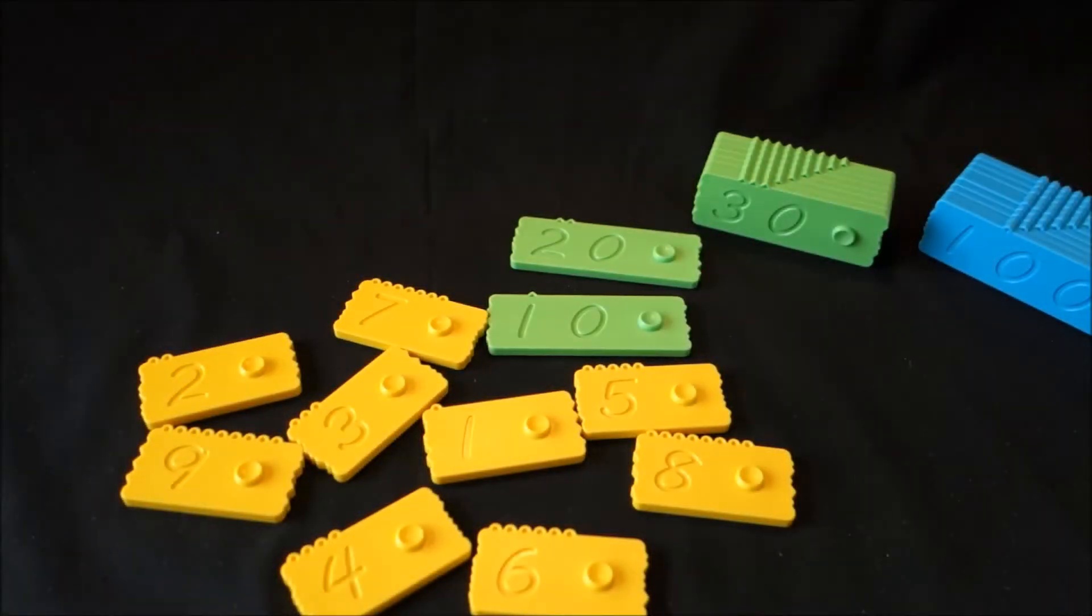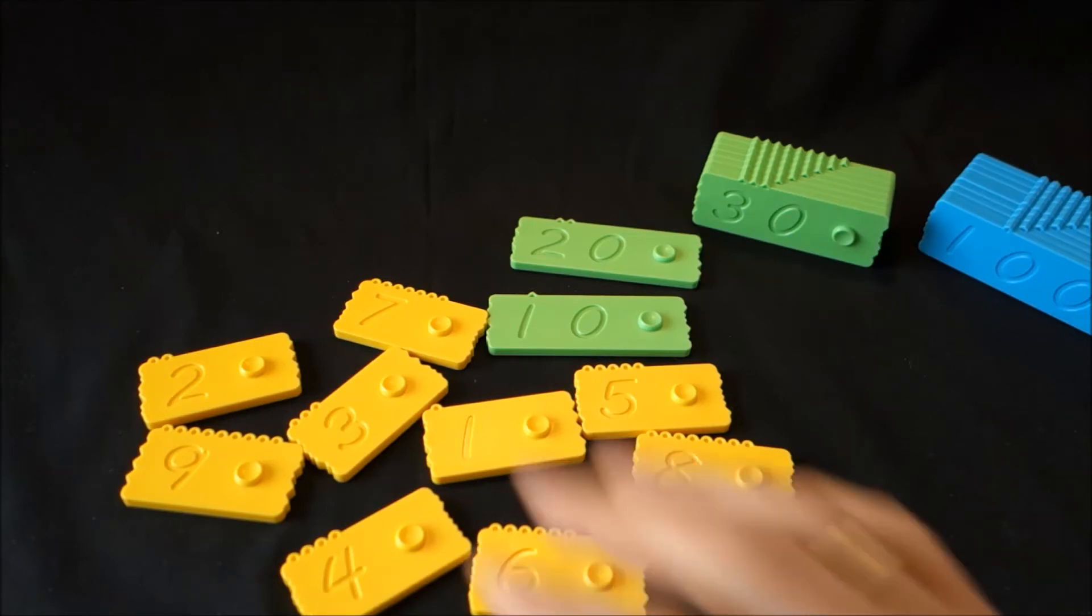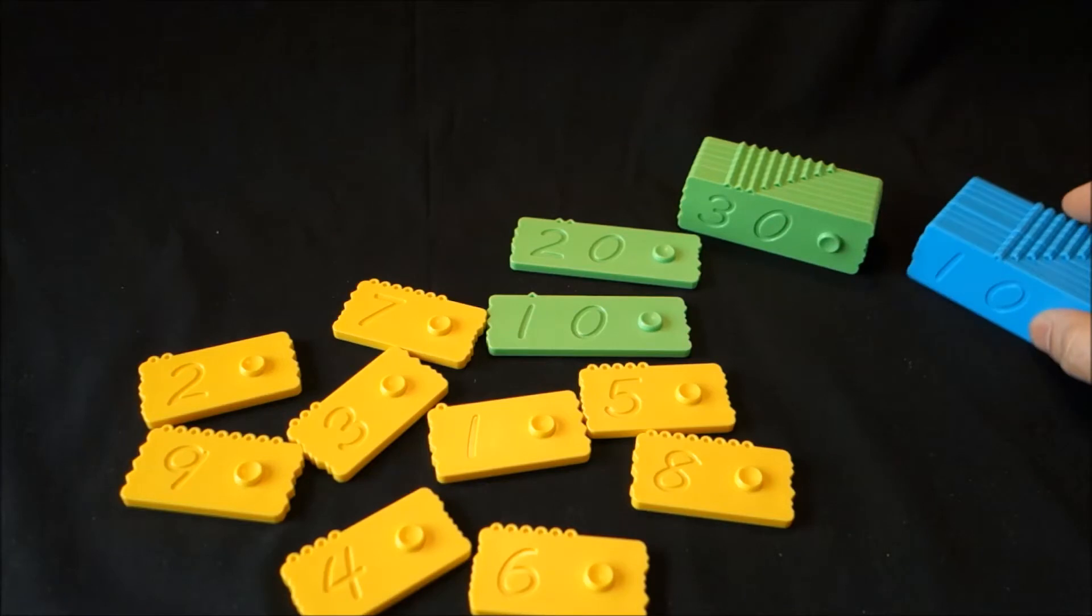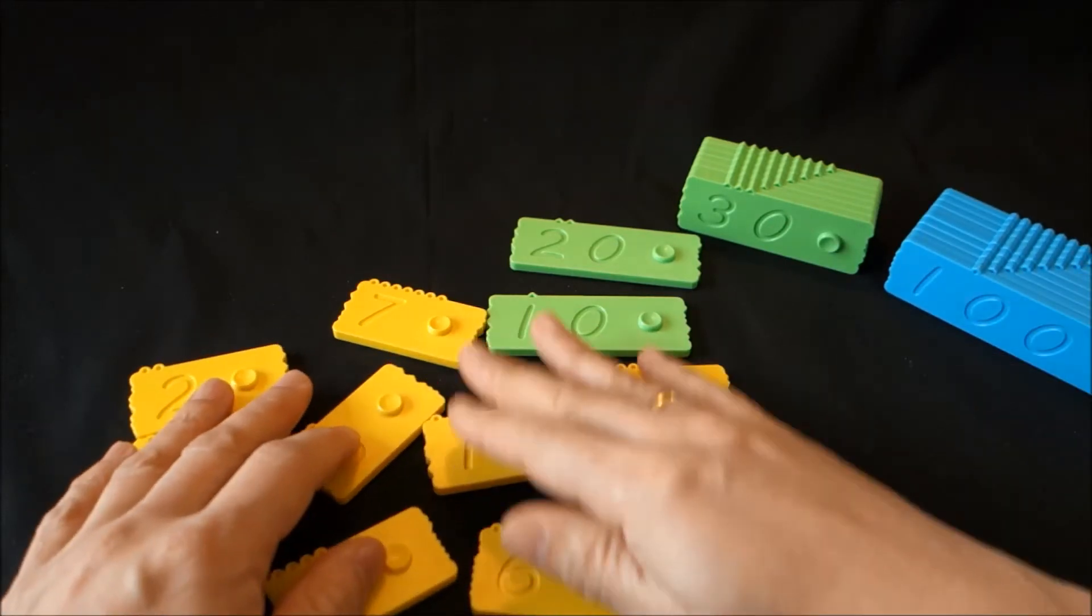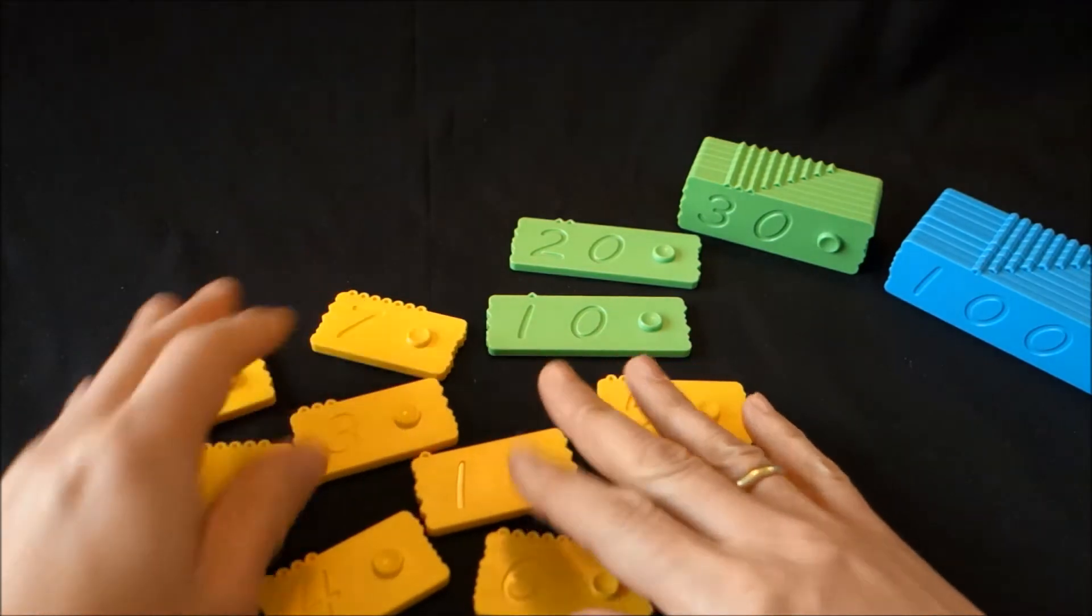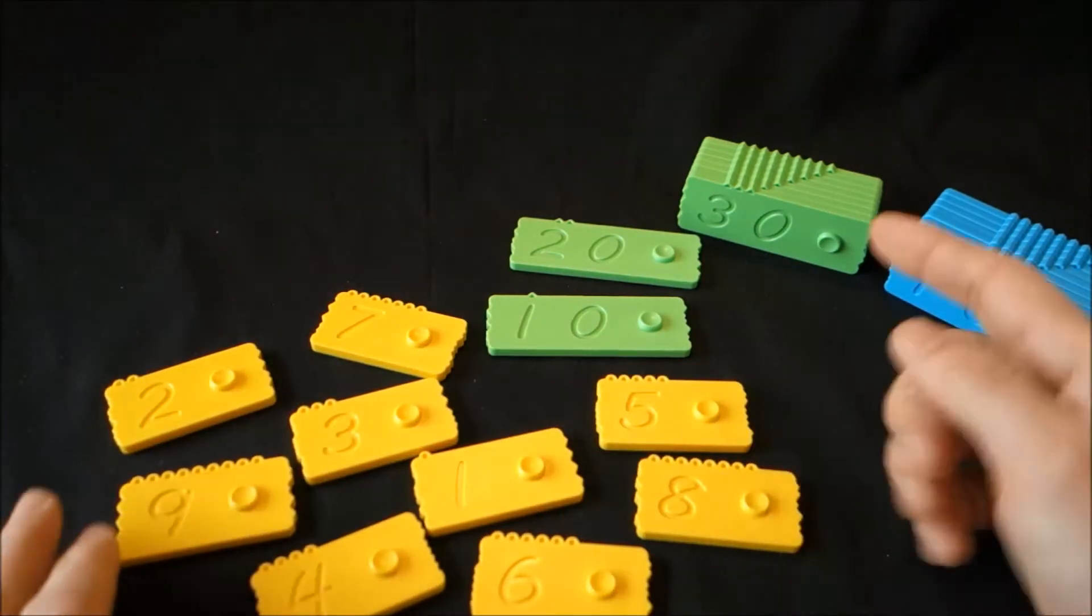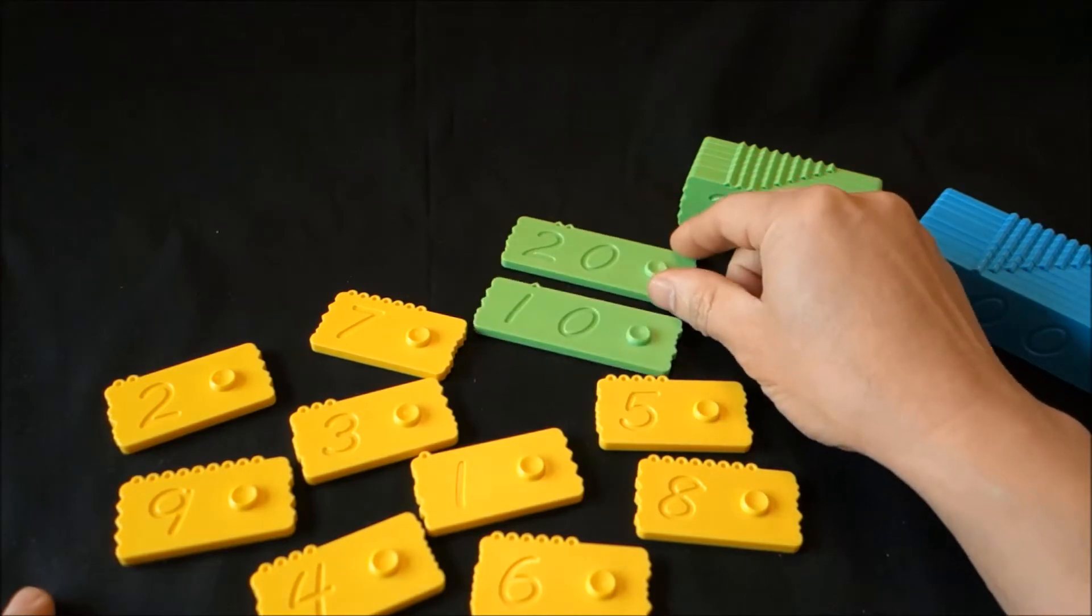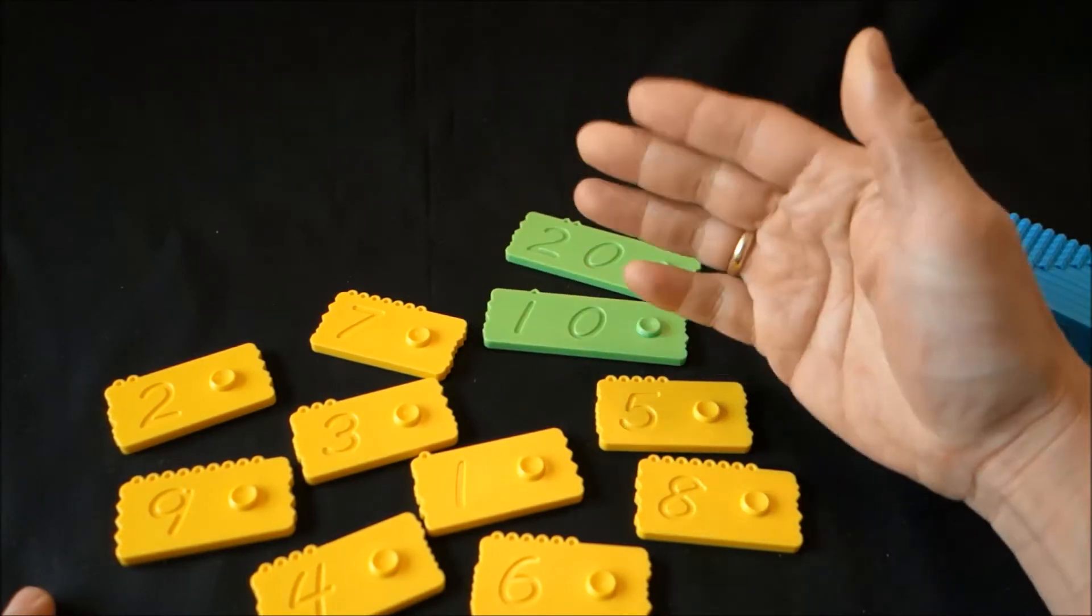This exercise is called building houses and it is essentially about building multi-digit numbers in the decimal system. You will be needing some yellow bricks, you will also be needing some green bricks that could be 10 or 20, and we could perhaps add some more bricks. But let's start with that.